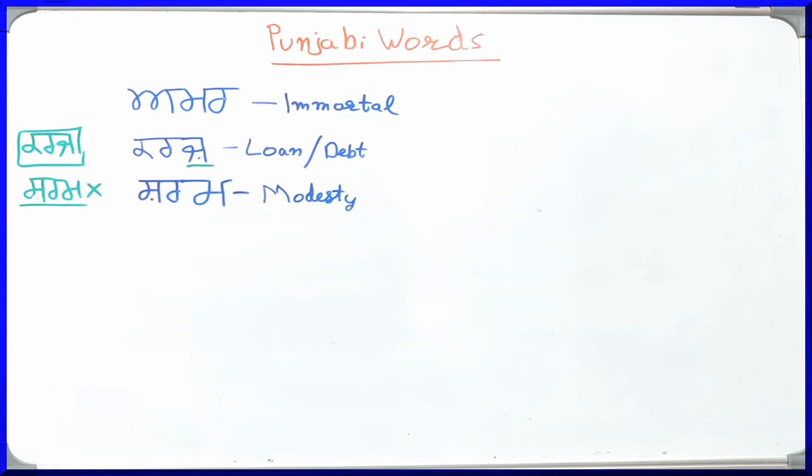So when Gurbani was getting written right in the earlier centuries, Bindiwale letters were not there and Bindi was actually not there. That is why it is mandatory to have Santhya so that you would know where to put Bindi or where to put dot and where not to. So just remember this.